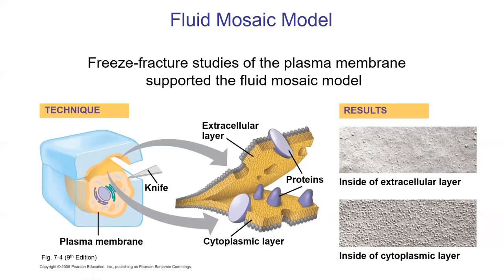Some historical context on how we understand membrane structure: one technique is a type of freeze-fracture scanning electron microscopy. A membrane is frozen in liquid nitrogen, cut with a knife, and peeled — similar to peeling a banana where it peels along the path of least resistance. For a membrane, that path is right between the two layers of the phospholipid bilayer. After fracturing, scanning electron microscopy reveals all those embedded proteins — evidence for the mosaic part of the model.